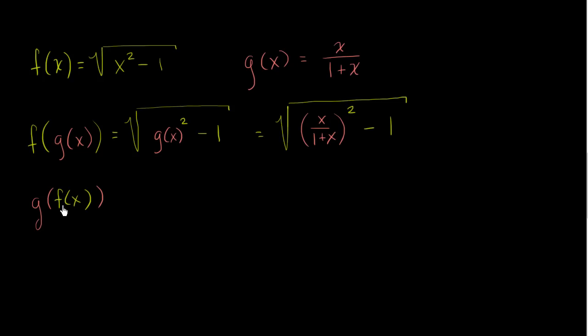Well, f of x is now the input into g of x. So everywhere where we see the x here, we'll replace it with f of x. So this is going to be equal to f of x over 1 plus f of x.